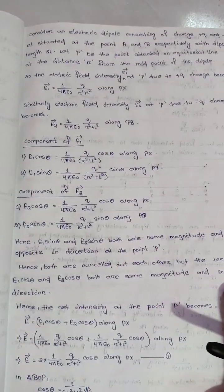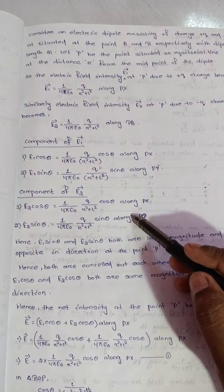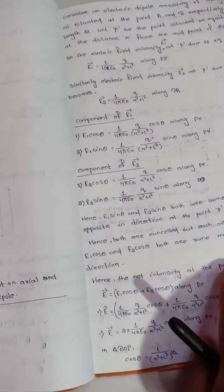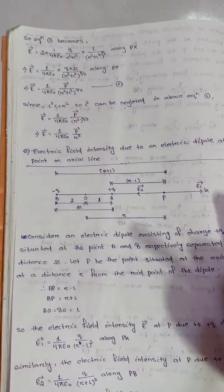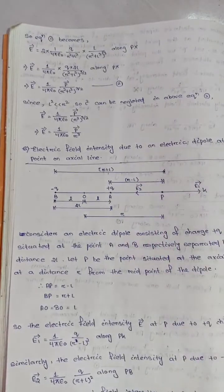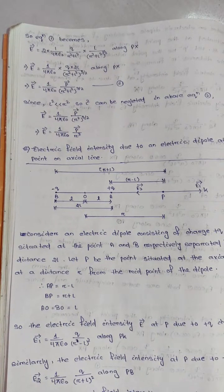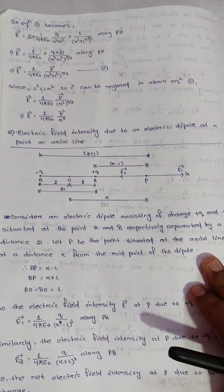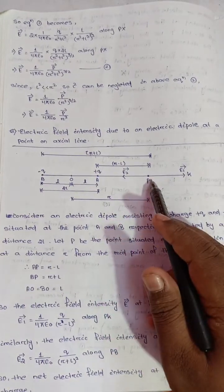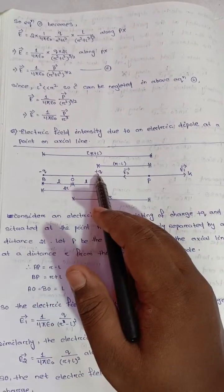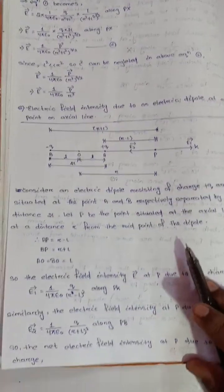We need to discuss the electric field components e₁ and e₂ for different parts of the plate. For a point on the axial and equatorial line due to an electric dipole: e₁ and e₂ are the field components at the point of observation. Practice this derivation for the final answer.